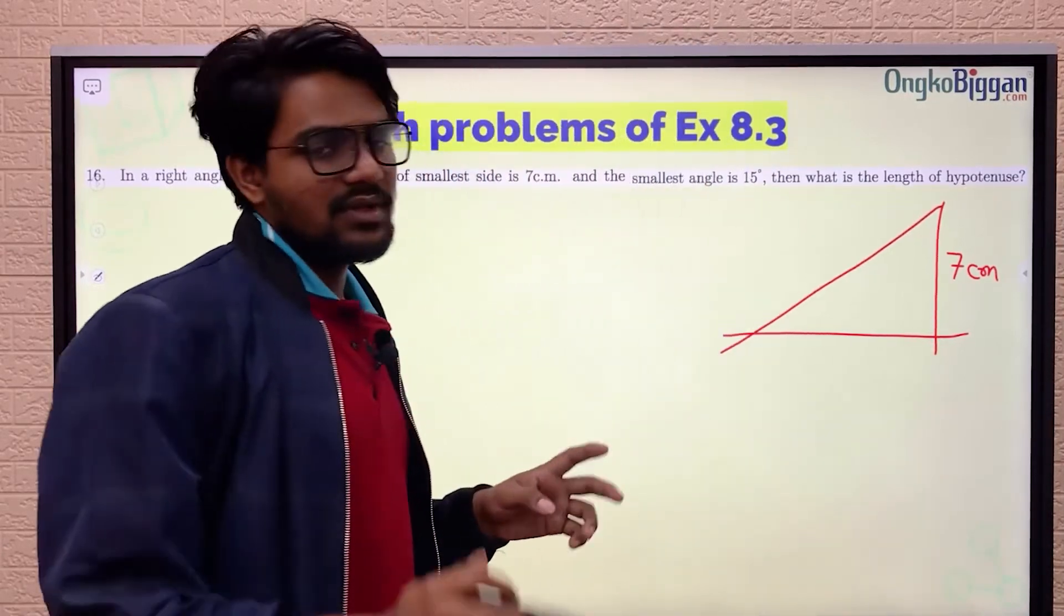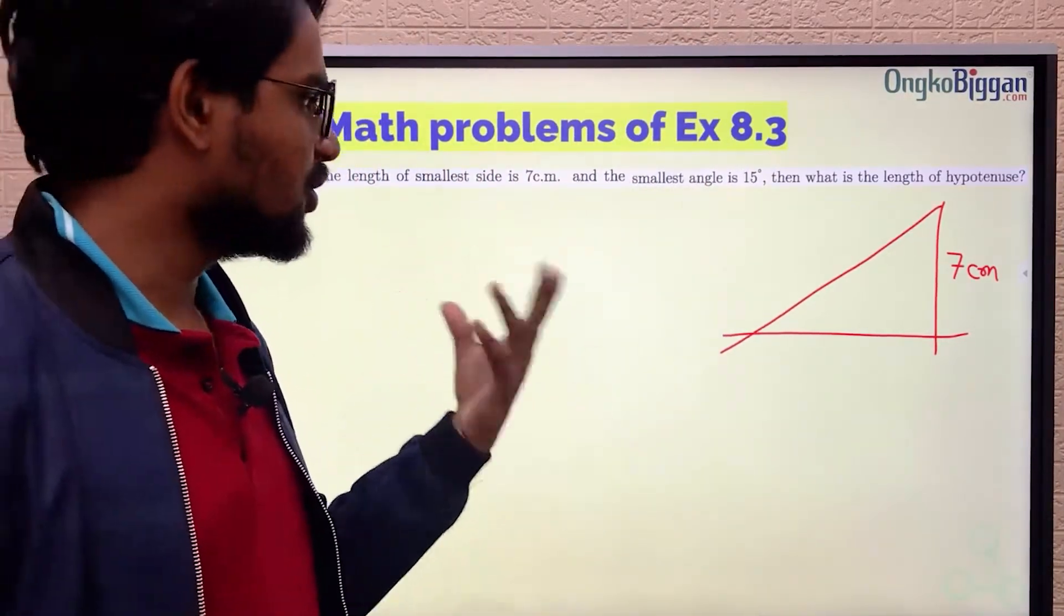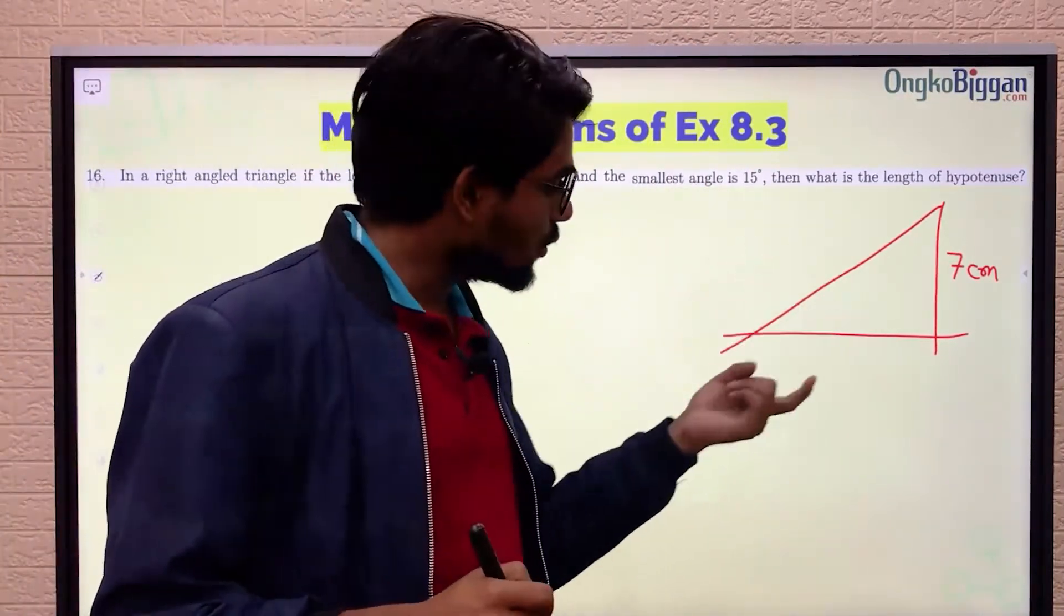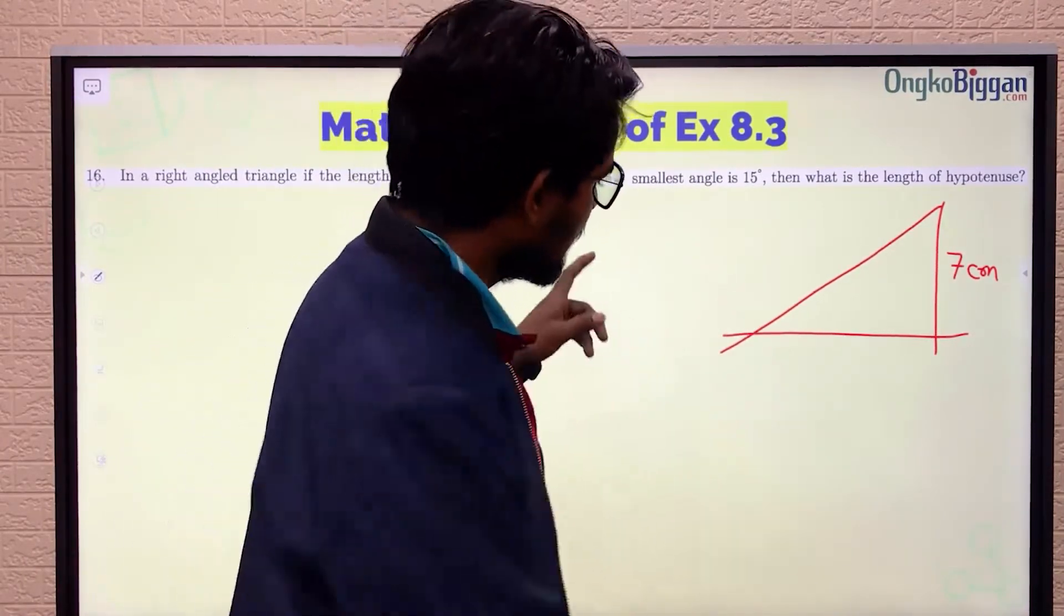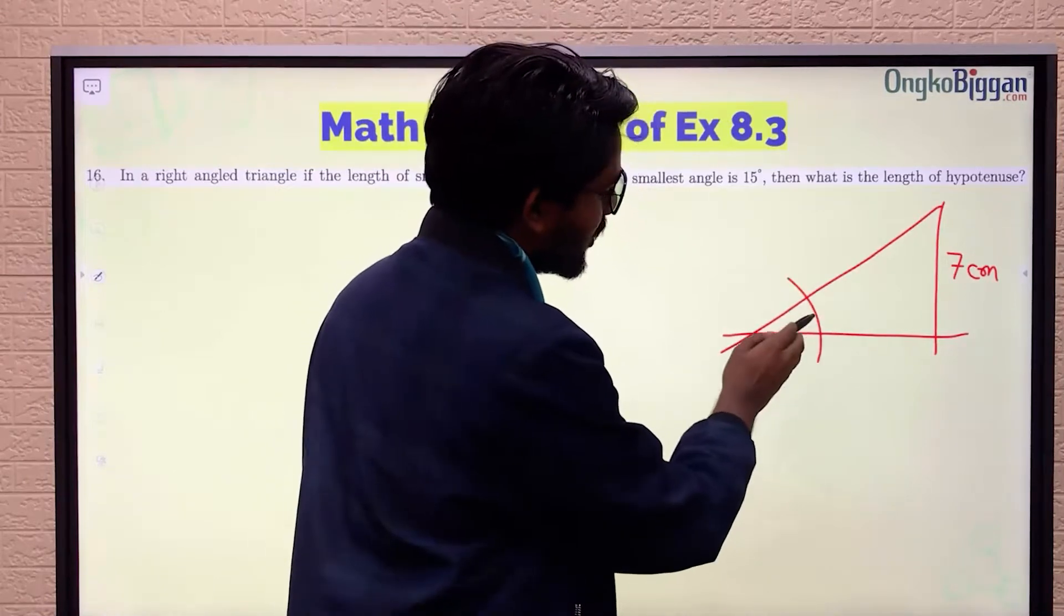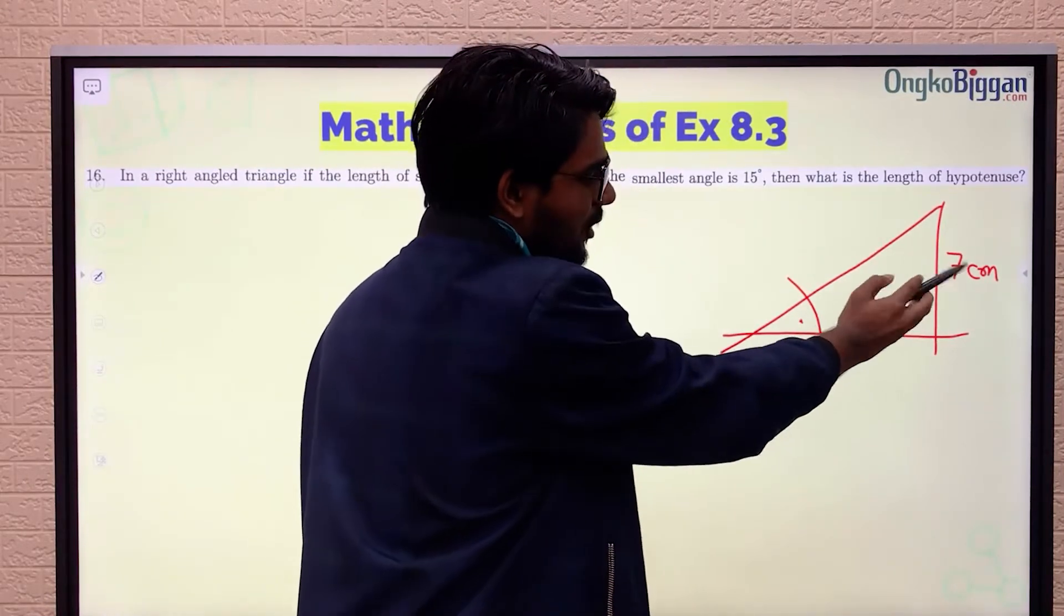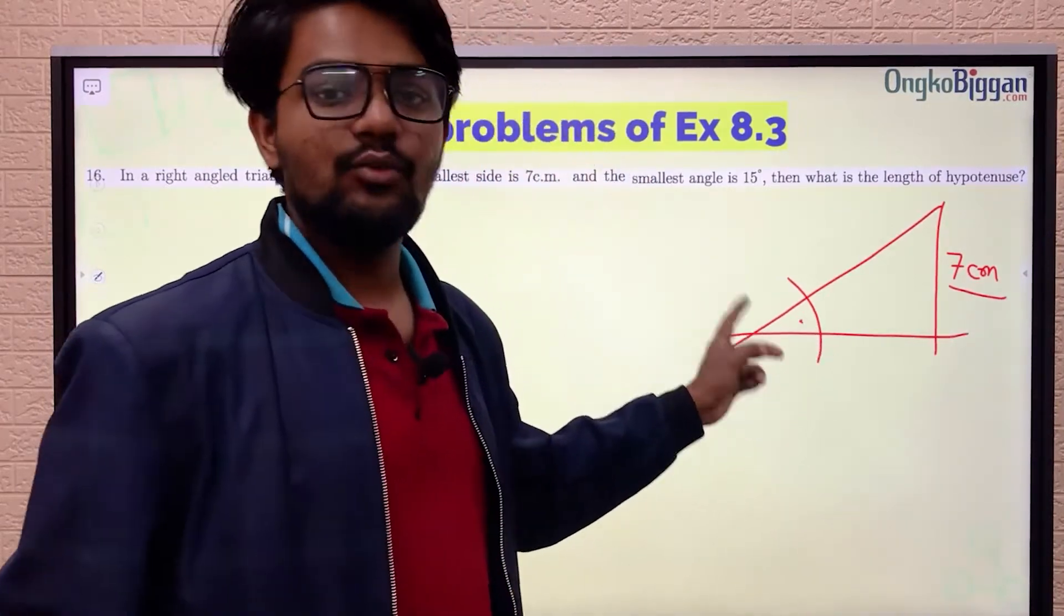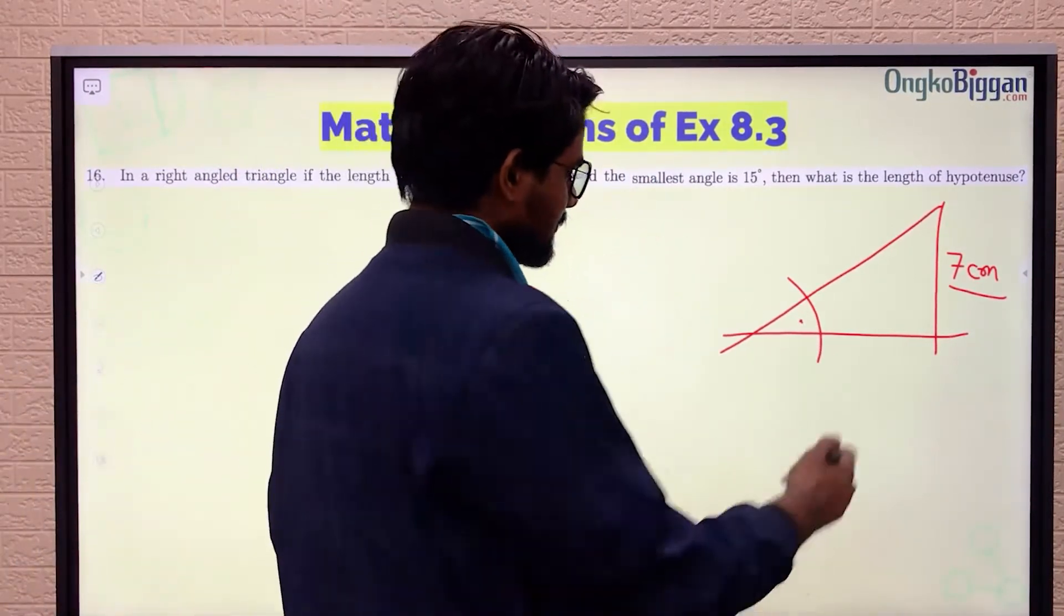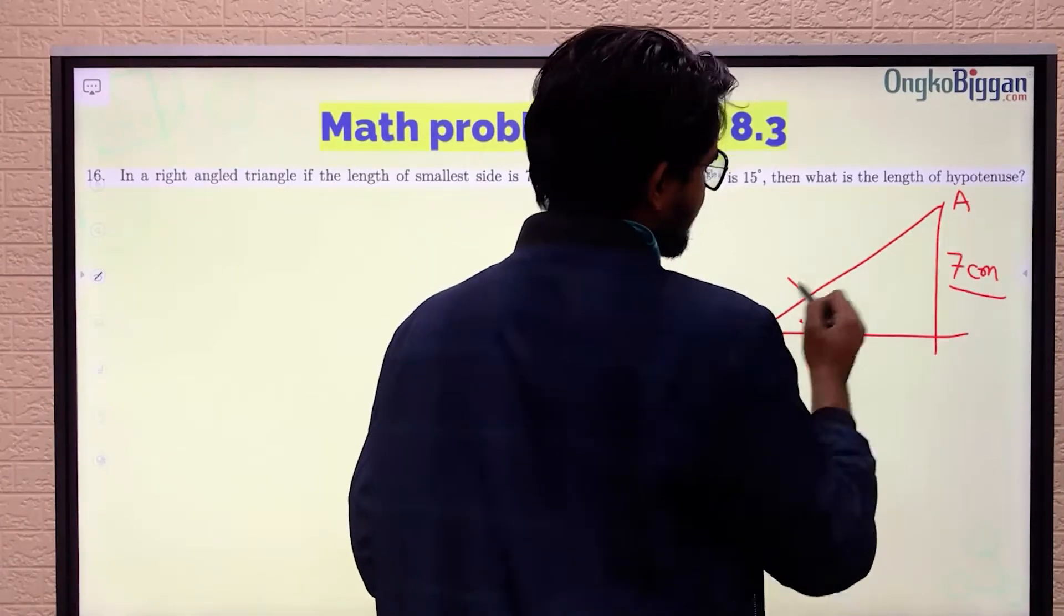If you have the theorems of triangle memorized, you will know that the angle opposite to the smallest side is the smallest angle. So this angle is directly opposite to the smallest side, meaning this angle will be the smallest angle.